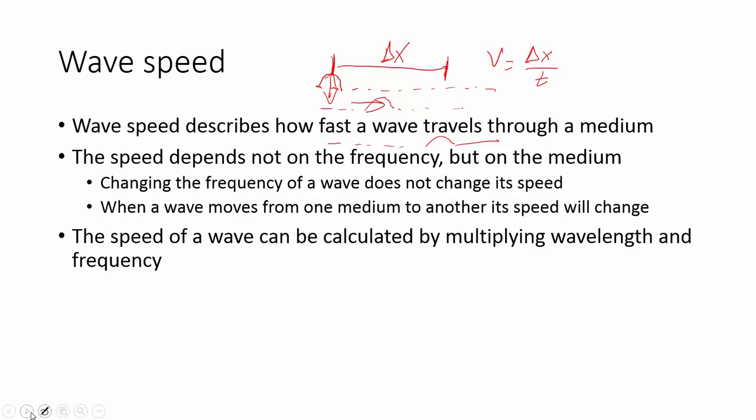The speed of a wave can be calculated by multiplying wavelength and frequency. This might seem a little bit odd at first that we're multiplying to get a speed. But if we think about this, wavelength is a distance, lambda is measured in meters.